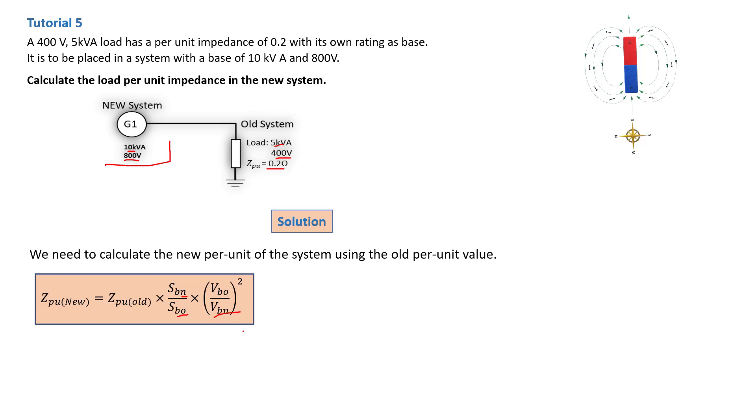We have the following values: S base new is 10 kVA, S base old is 5 kVA, V base old is 400 volts, and V base new is 800 volts.